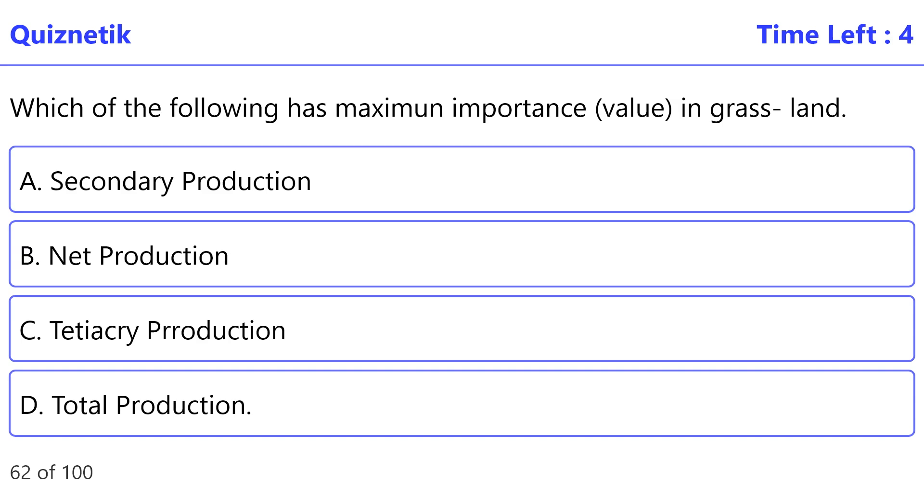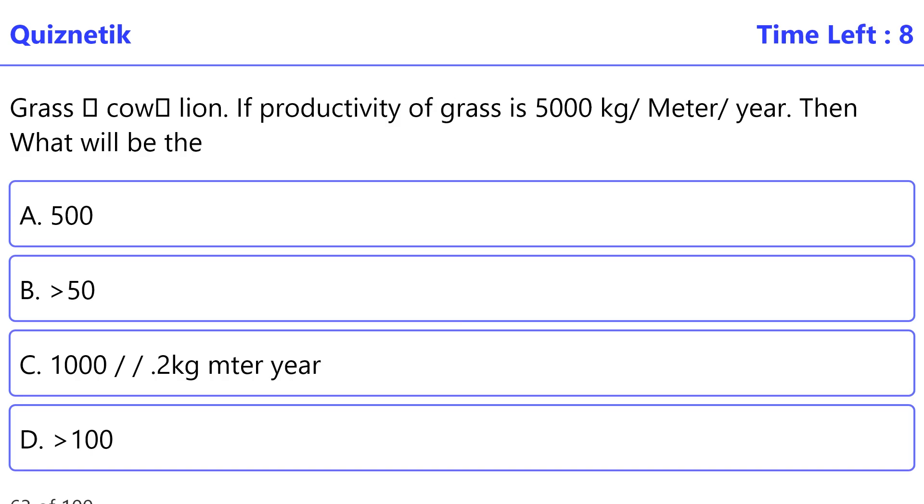Which of the following has maximum importance value in grassland? The correct option is D, total production. Grass cow lion.